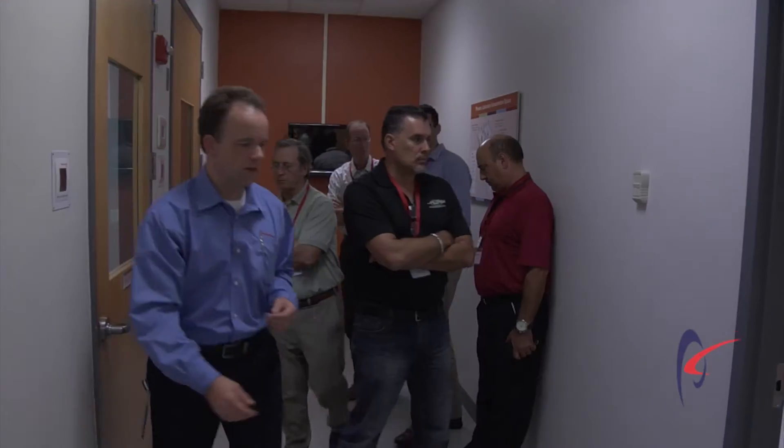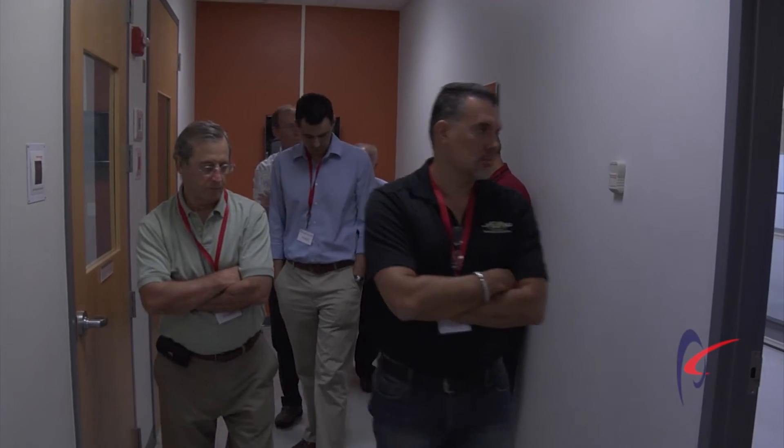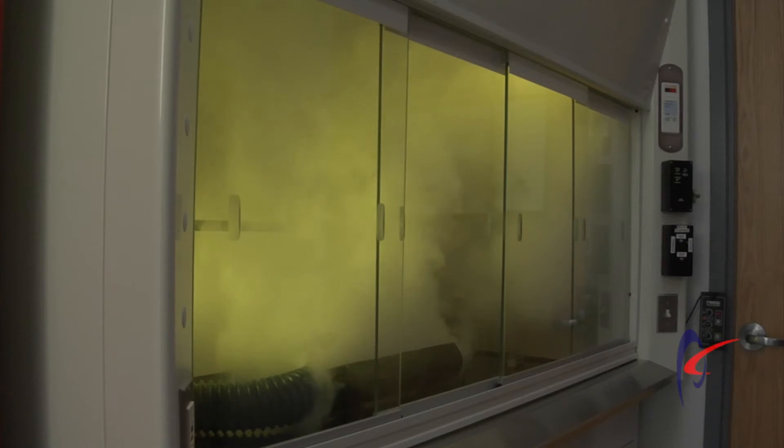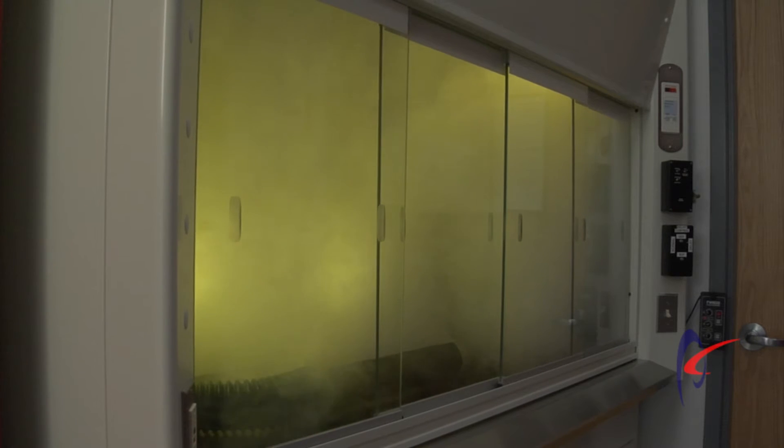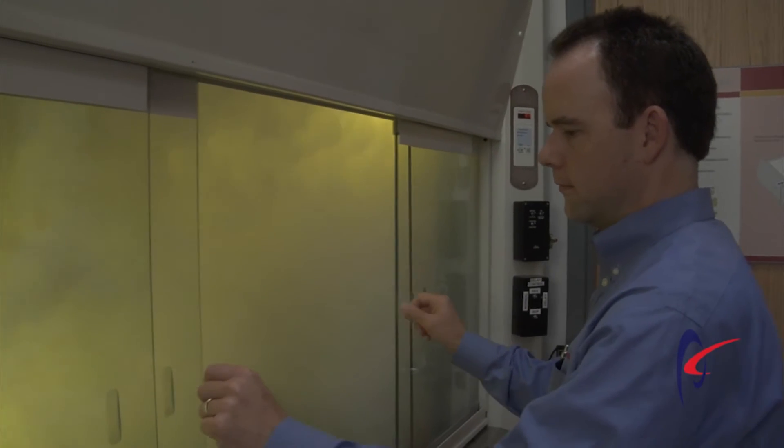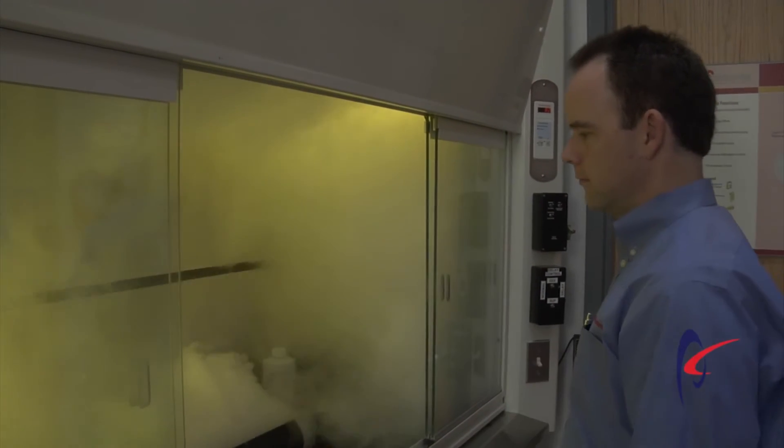The fume hood containment demonstration that we do here at Phoenix Controls at all of our customer visits is very dynamic. We have a smoke machine inside a fume hood so you can visualize the airflow patterns. And we operate that in a Phoenix mode, which is that less than one second speed of response. Move the sash into various different positions, openings, closings, and we see that visually from that smoke, proper containment at all times and all positions.